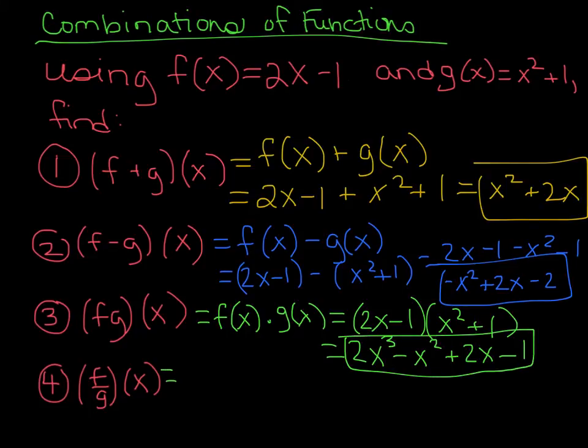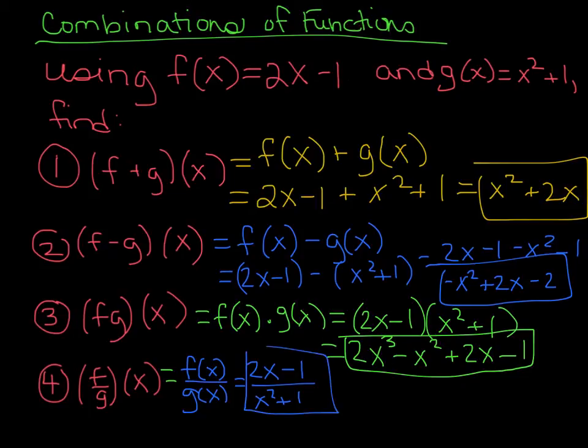The division one, I think people look at this and they think it's going to be the hardest one. Occasionally it is, but in this case, it's actually really easy. All you're going to do is rewrite this as (2x - 1)/(x² + 1). If you see anything that you can simplify, like if you can factor something out and cross out a factor, that's great. But in this case, we can't do anything, so we just rewrite it like that.